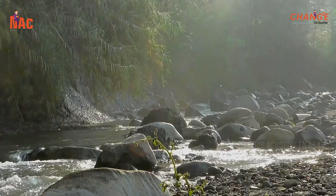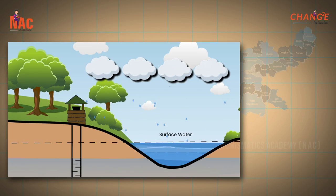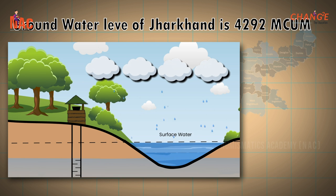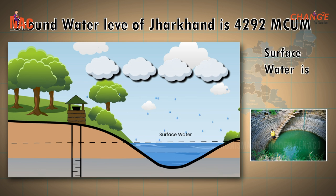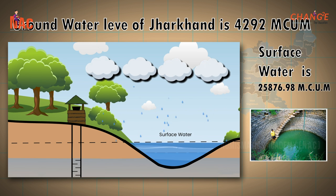As per dynamic resource calculations, the present scenario of groundwater in Jharkhand is 4,292 million cubic meters and the surface water is 25,876.98 million cubic meters.